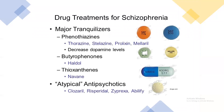Pharmacological treatment for schizophrenia includes major tranquilizers like phenothiazines — including Thorazine, Stelazine, Prolixin, and Mellaril — which decrease dopamine levels. Also used are butyrophenones like Haldol, thioxanthines like Navane, and atypical antipsychotics like Clozaril, Risperidol, Zyprexa, and Abilify.